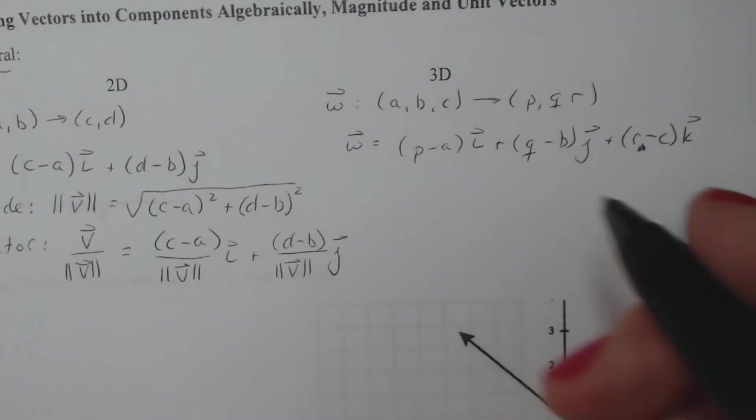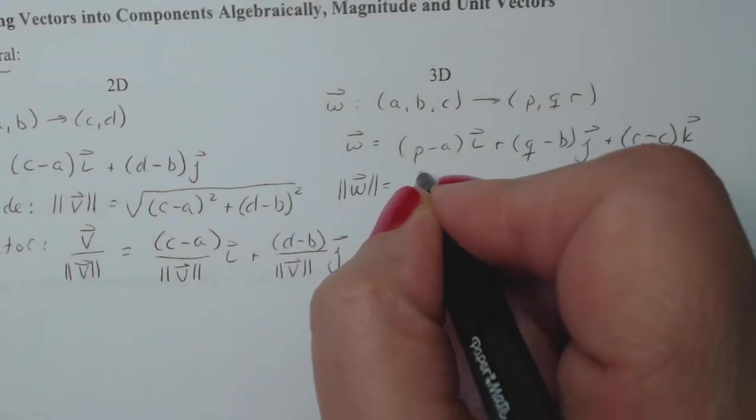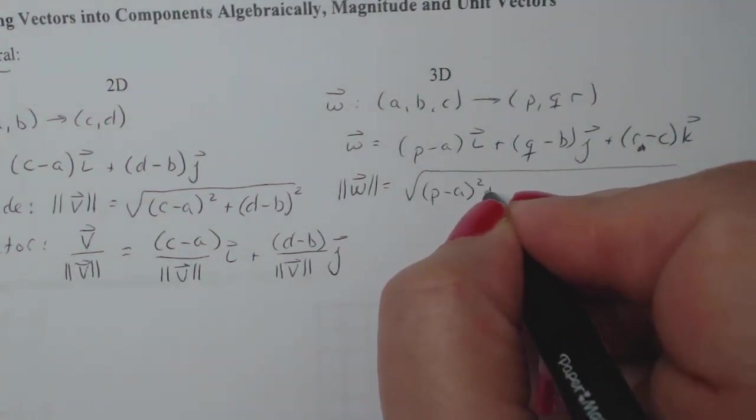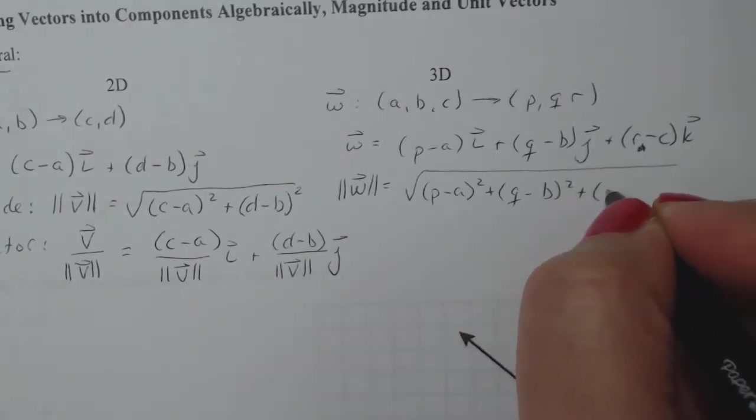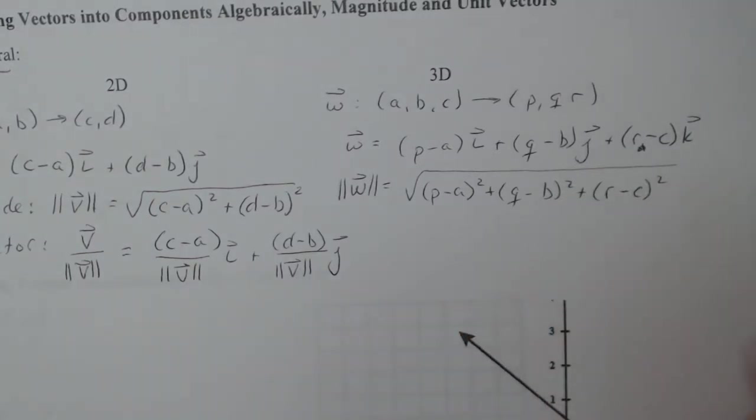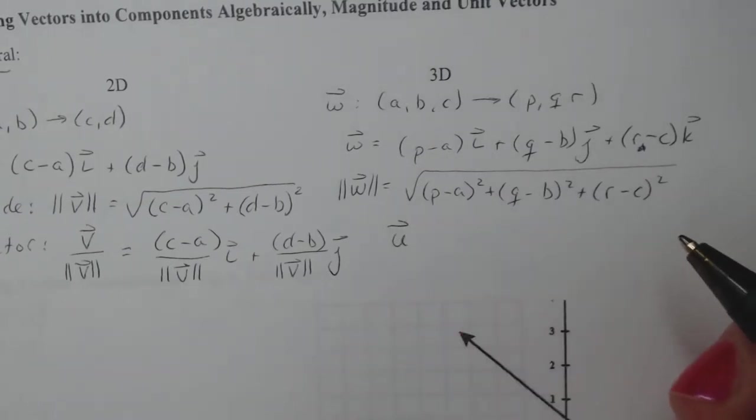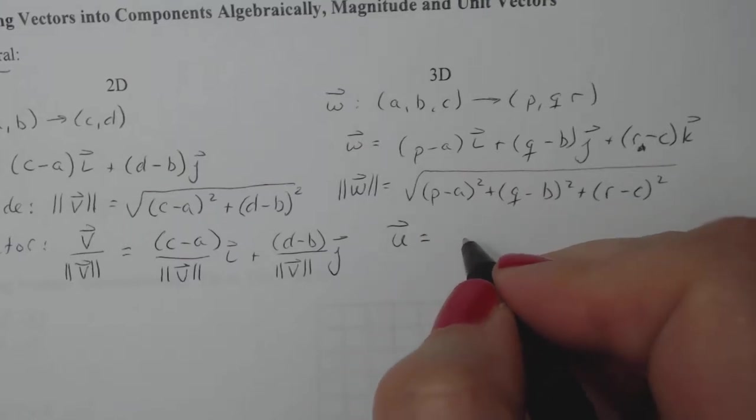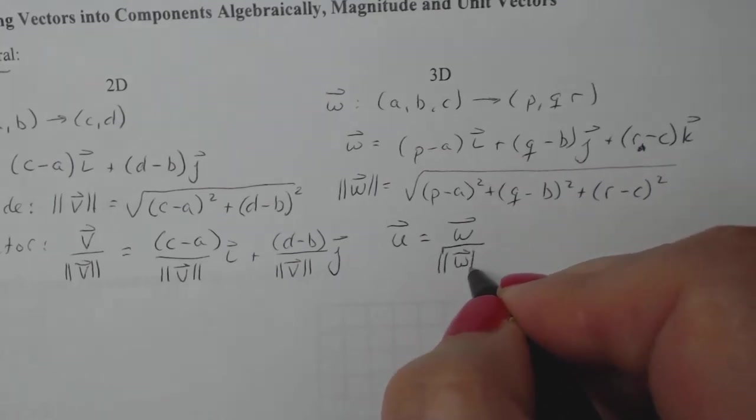For the magnitude, the first two pieces: (p - a)² + (q - b)², and then I add the third component (r - c)². And the unit vector honestly is exactly the same, and generally we denote unit vector with a little u. And that'll be the components for W divided by the magnitude of W.